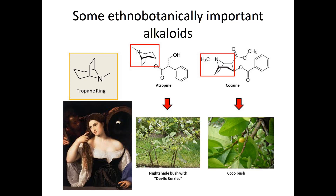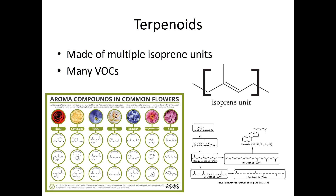Atropine has also been used in pesticides, and today is used during some surgeries to reduce saliva and slow heart rate. Terpenoids are another class of compounds — often repeated chains of isoprene units — where different numbers of isoprene units give different properties. Many of these compounds are volatile, meaning they transfer through the air. Terpenes and terpenoids are the primary constituents of essential oils, responsible for many smells and tastes from plants and medicinal flowers.